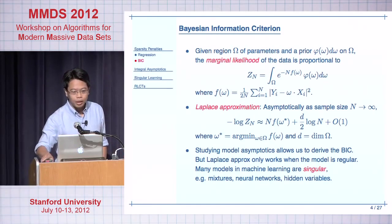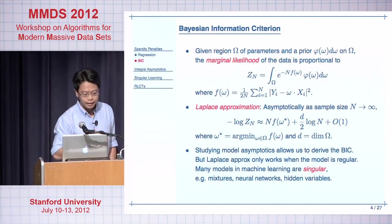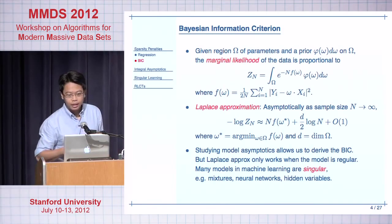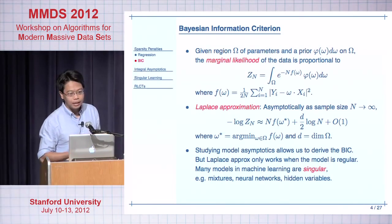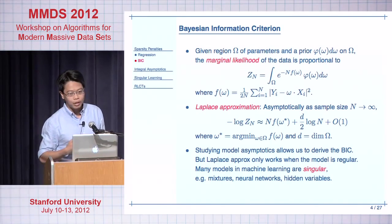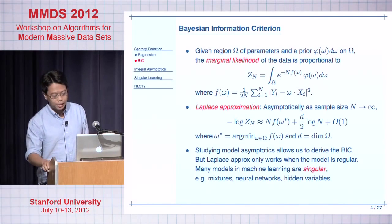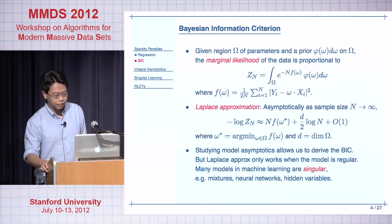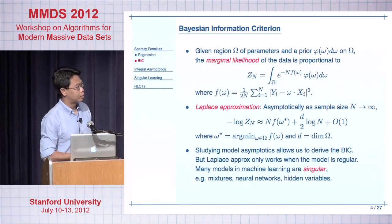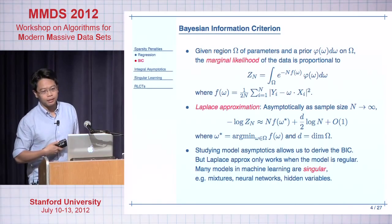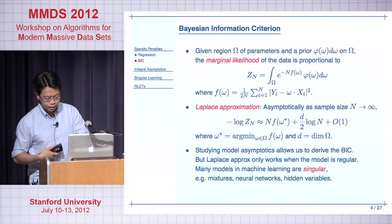So studying model asymptotics, or asymptotics of statistical integrals, helps us derive the BIC. However, the Laplace approximation only works when the model is regular, but many models we're interested in in machine learning are singular — for instance, mixture models, neural networks, and hidden variables. So how do we extend this asymptotic analysis to those singular integrals?